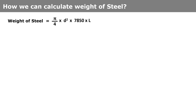Now let us understand how we can calculate the weight of a bar. The formula to calculate the weight of a steel bar is: π/4 × d² × 7850 (which is the density of steel) × L (which is the length of the bar). Now consider we have ordered a 12 mm bar, so we will see a few possibilities of weight differences.